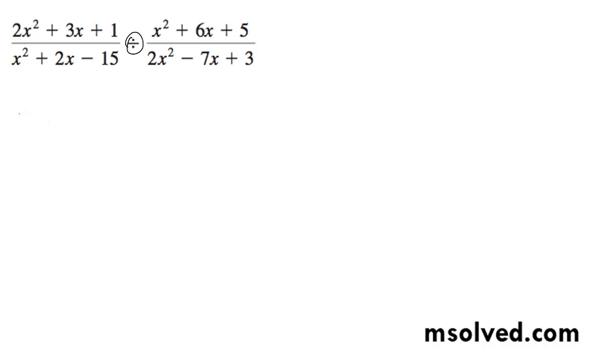So starting off with the left side, I'm going to get 2x plus 1 and then x plus 1. On the bottom here, I'm going to get x plus 5, x minus 3.